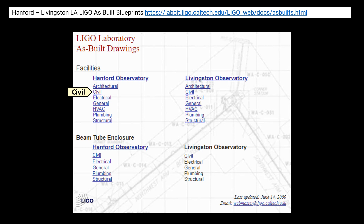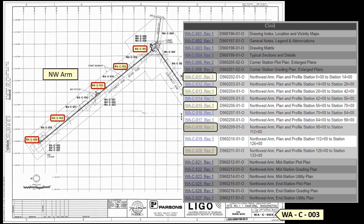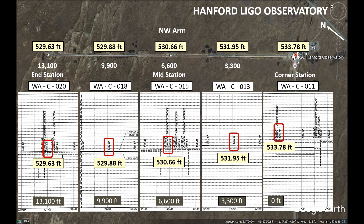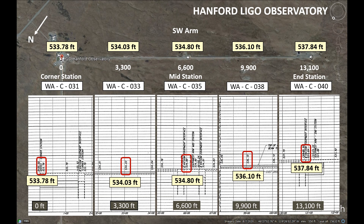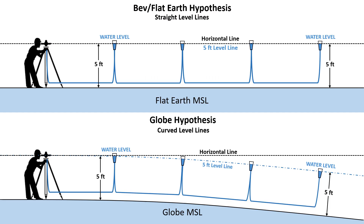I used the civil drawings for the Hanford Observatory. These are the blueprints I used for the Northwest Arm that gave me five evenly spaced elevations, and these are the five blueprints I used for the elevations for the Southwest Arm. Now Flat Earthers like to say that water finds its own level, meaning the surface of water is the same as a horizontal plane.